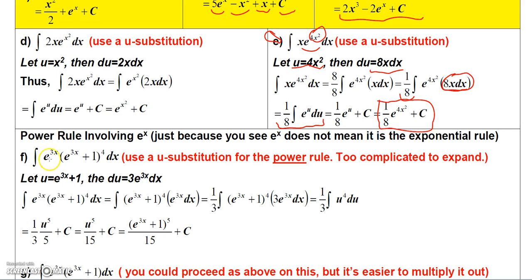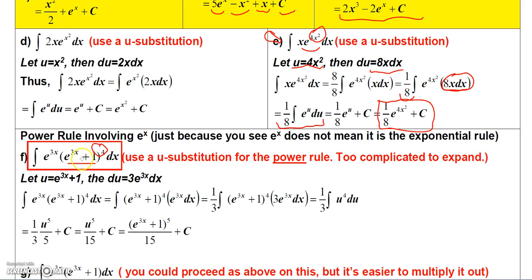On this next problem, you might think you'll use the e^u rule, but this is actually a u^n integral, not an e^u integral. Here I have (e^(3x) + 1) raised to the 4th power, so I need to get this into the form u^n du — specifically u^4 du.